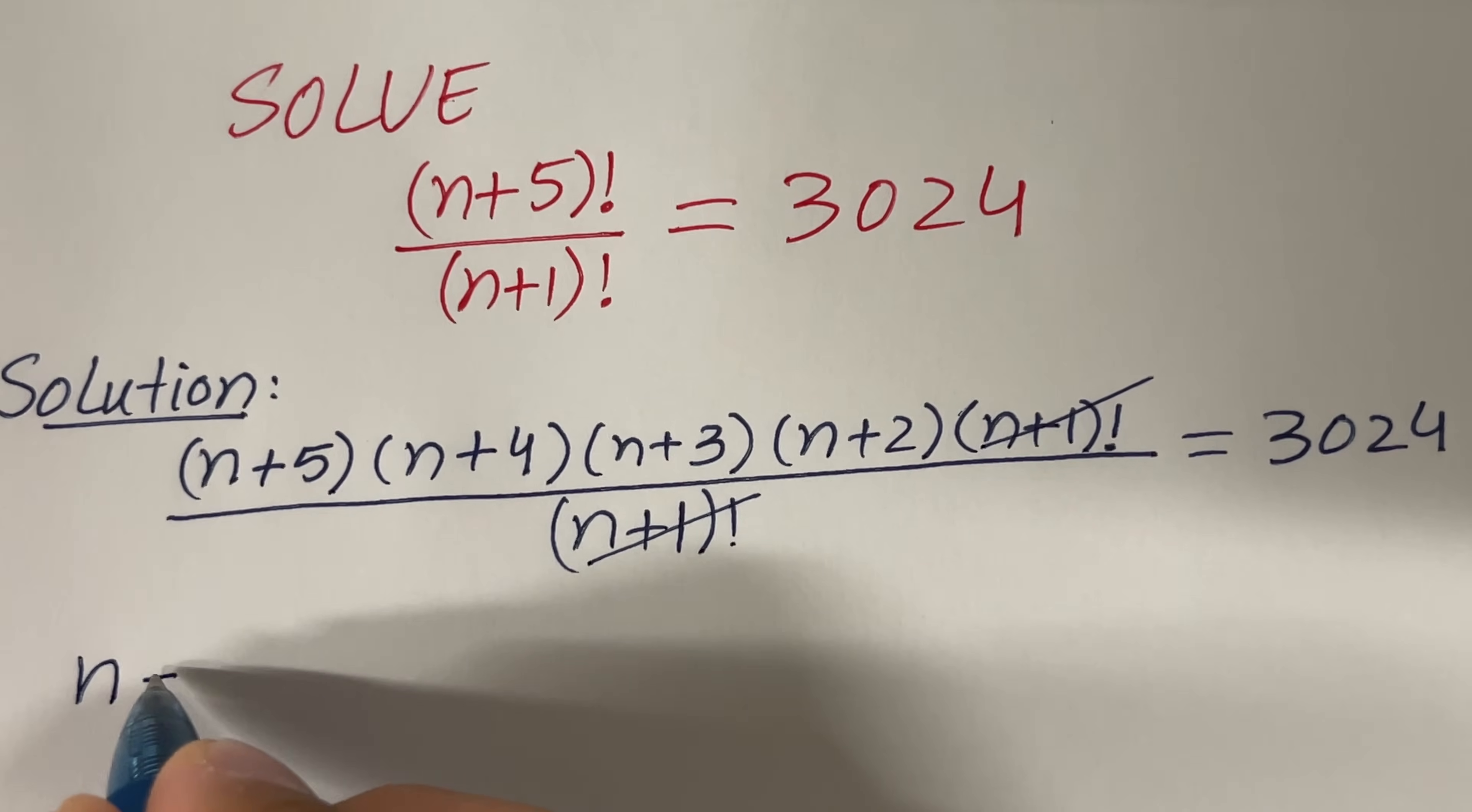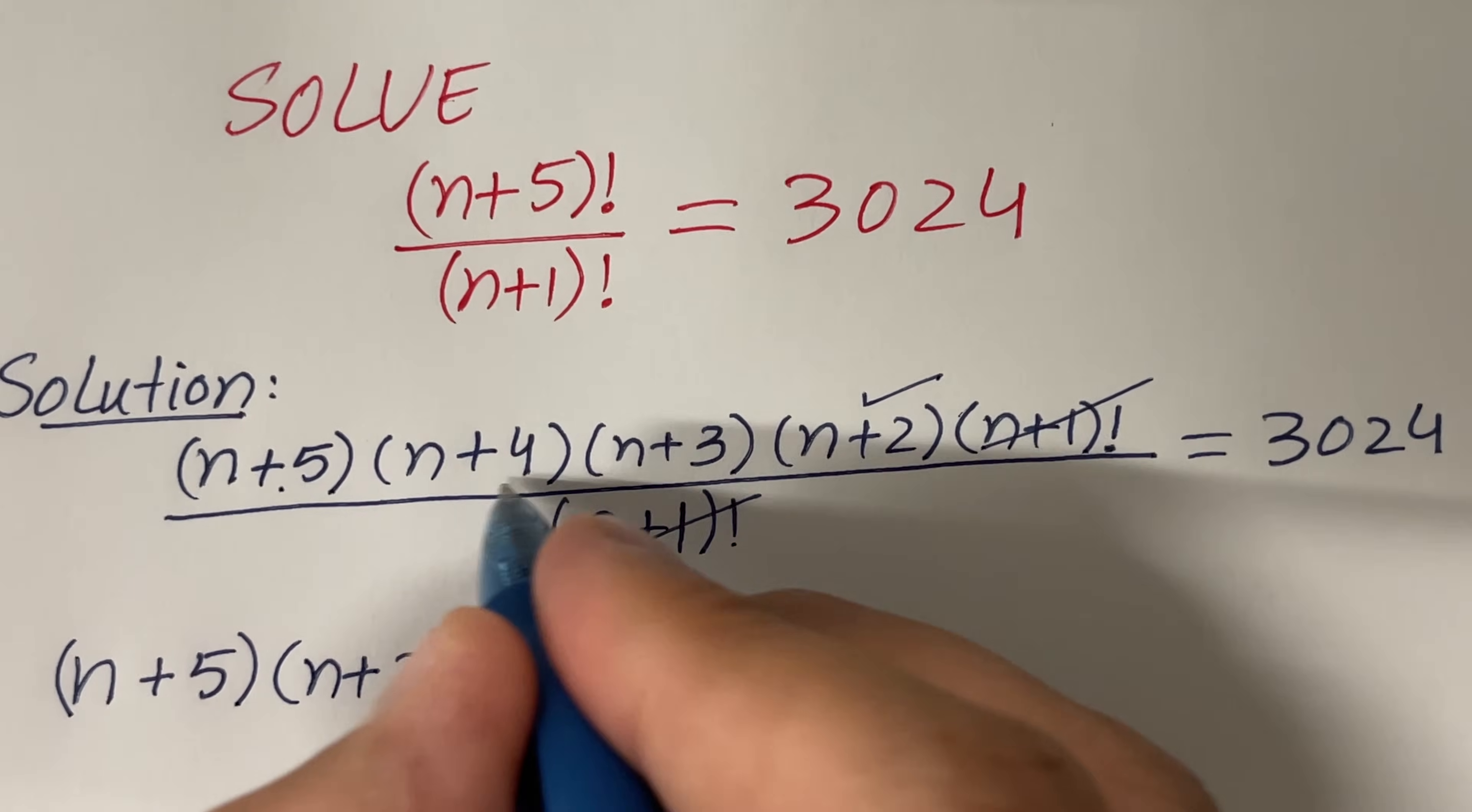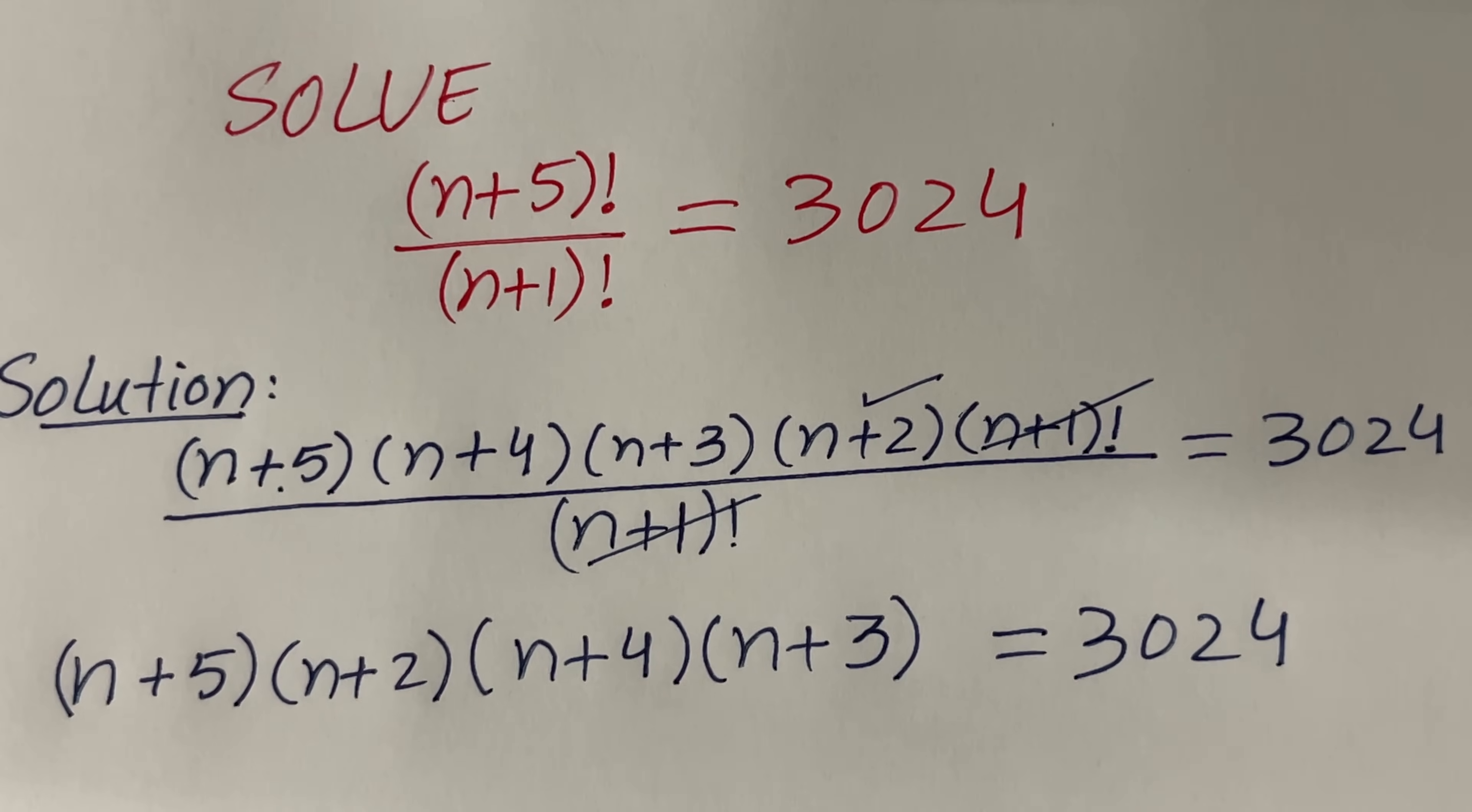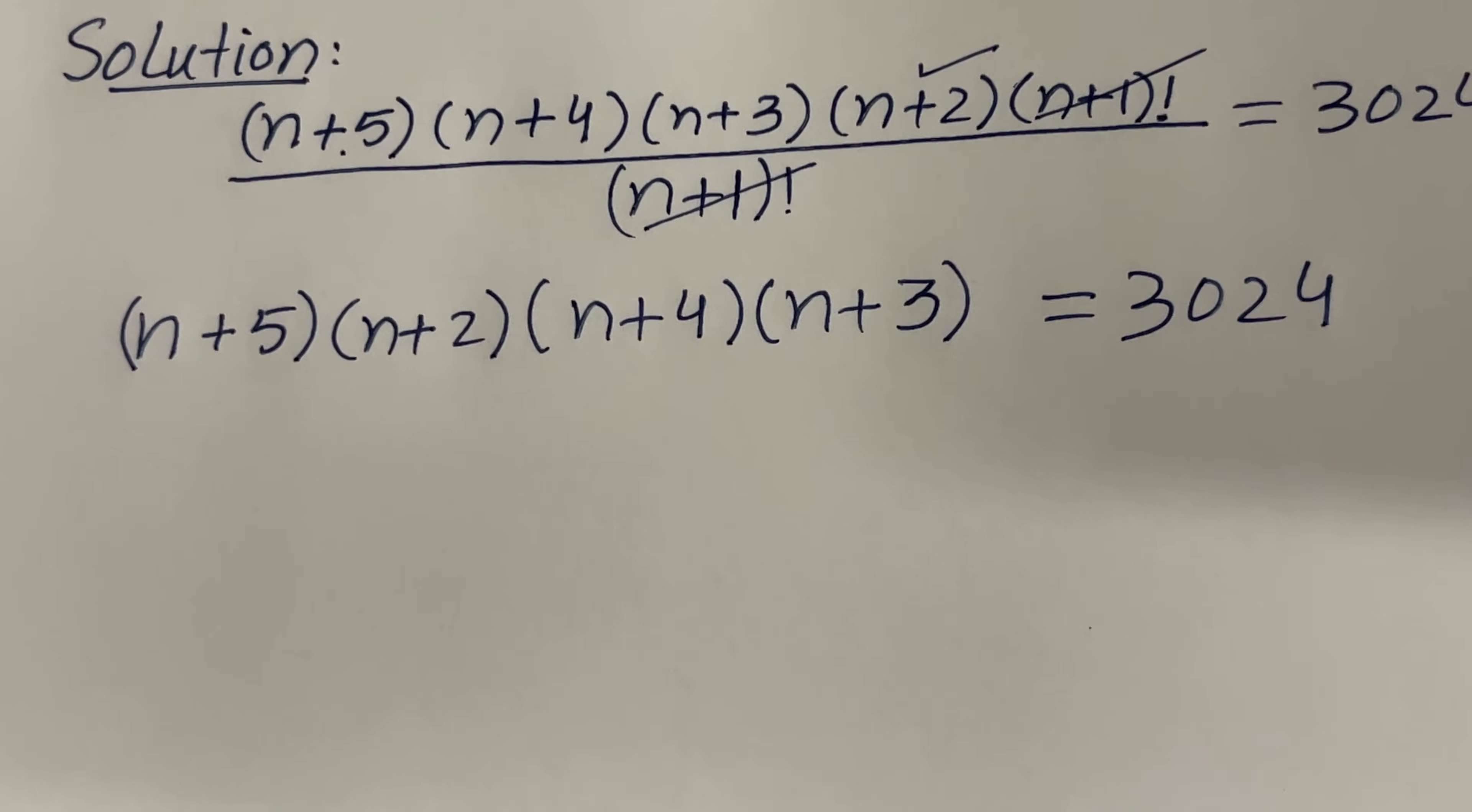On the left-hand side, we will have (n+5). I want to pair (n+5) with (n+2), and then I can write the rest of the two factors, not factorials, as it is. The given equation is now equivalent to this simplified equation, and we have to solve this equation now.